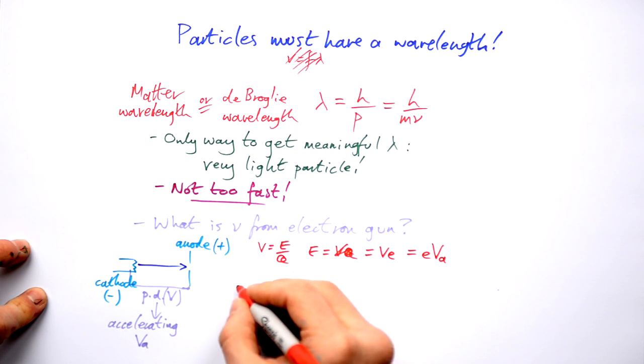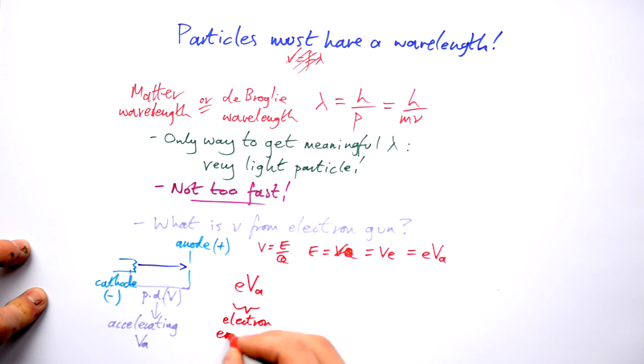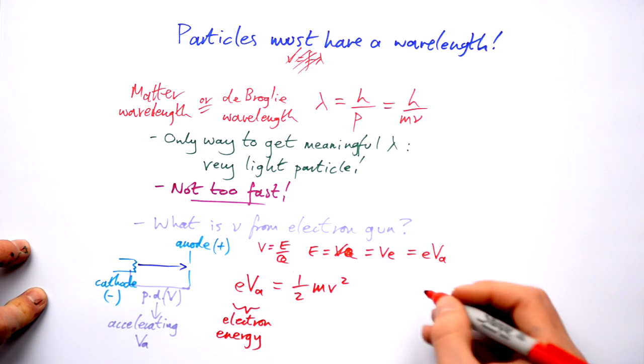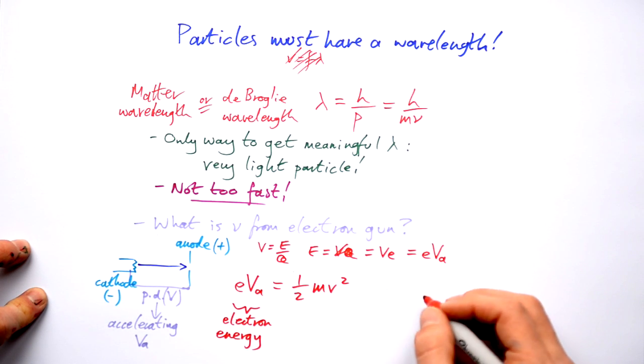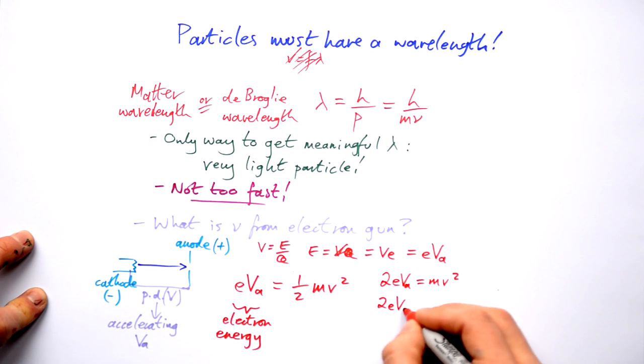So ultimately to find out the speed we say the energy of an electron after being accelerated equals half mv squared. All we have to do then is rearrange to find v. We'll do that one step at a time times the whole thing by two equals mv squared. So that means that two EVA divided by m gives you v squared and then square root the whole lot we end up with the square root of two lots of the electron energy divided by the mass of an electron.